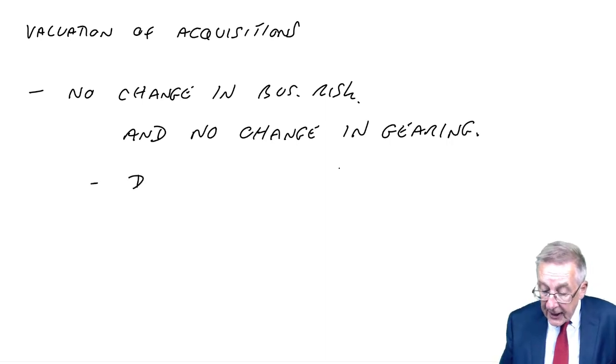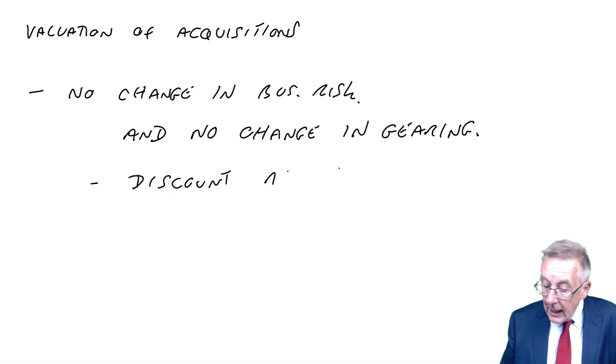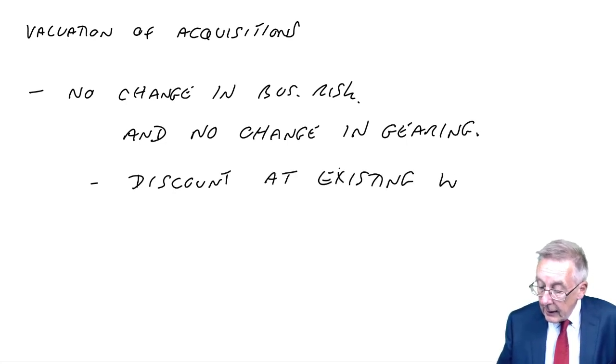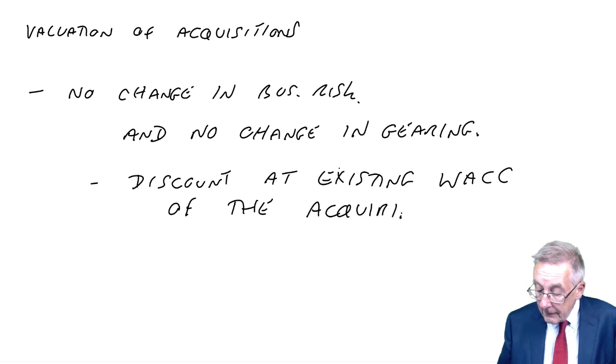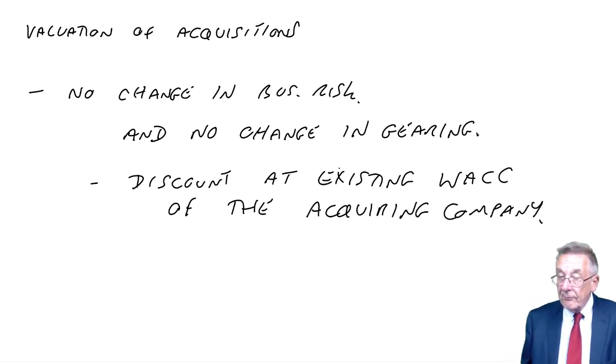Well, in that case, if there's no change in risk, business risk or gearing risk, the weighted average cost of capital won't change. We discount at the existing weighted average cost of capital of the predator, the acquiring company. Now, I'm not going to illustrate that. We know how to discount and calculate weighted average cost of capital. But that, in fact, is extremely unlikely.